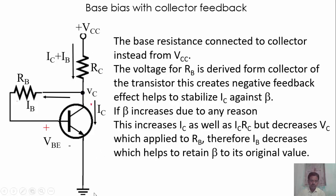But the voltage VC decreases, because the total voltage from VCC to ground is constant. If the drop across RC increases, then naturally VC decreases. When VC decreases, the base current IB decreases, and the voltage drop across RB decreases — that is RB times IB — so IB decreases. When IB decreases, the collector current IC decreases. So any change in beta is corrected and returns to its original value. This is the advantage of the collector feedback bias.